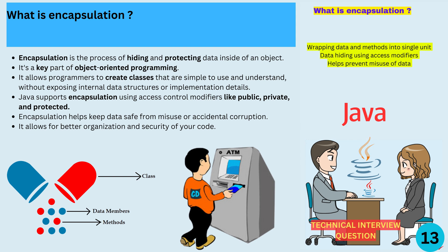The ATM machine has all sorts of internal mechanisms and components, including a printer, a keypad, a display screen, and a money dispenser. All of these are encapsulated in the machine. The user only needs to know how to input their PIN number, choose an action like withdraw or deposit, and press the buttons. They don't need to know the internal details of how the machine works or how it's built. This is encapsulation in action.